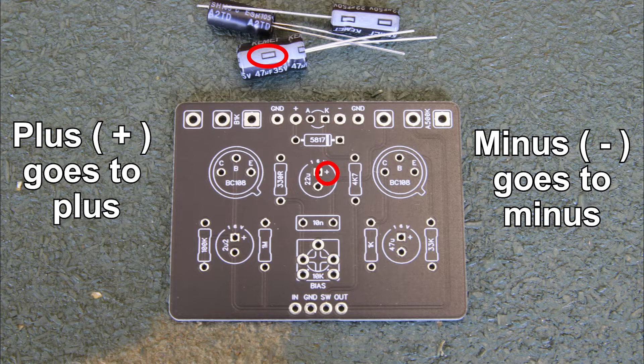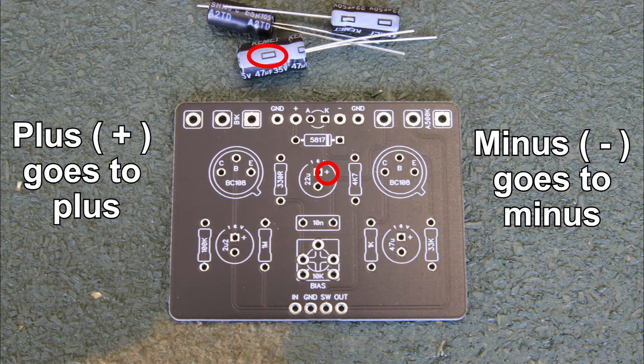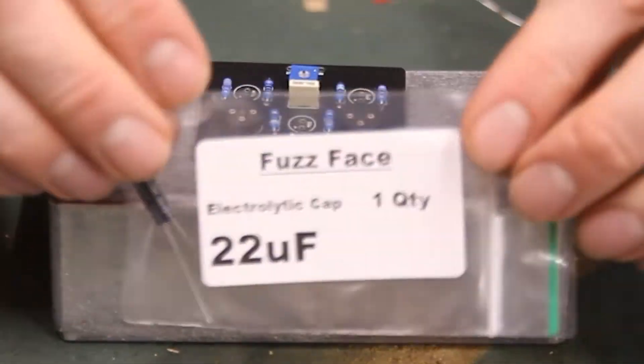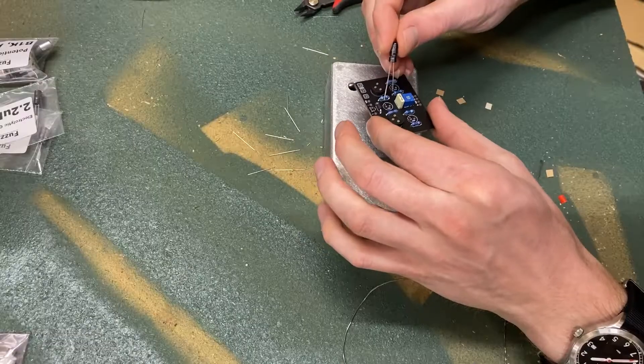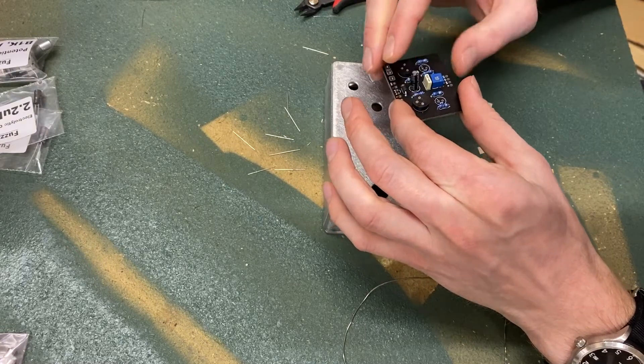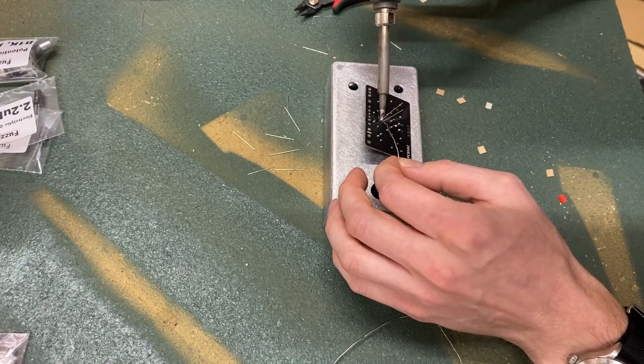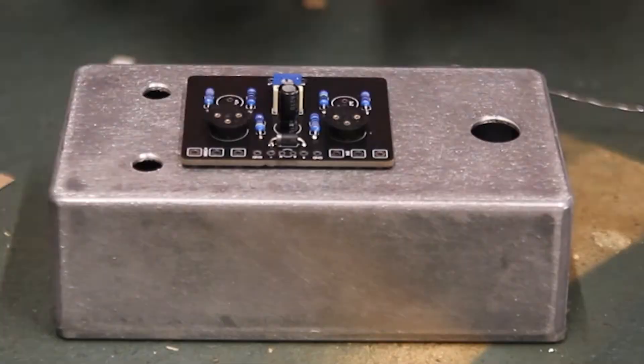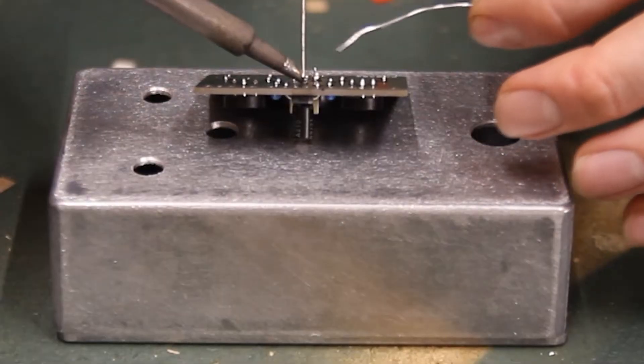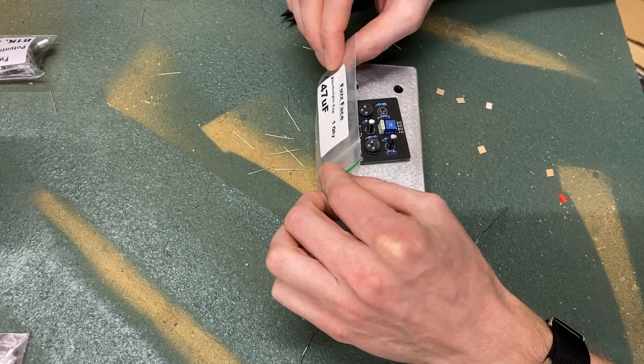There are three different values, so check that you are putting the correct caps in the correct PCB spots. Double check polarity before soldering them in. Take your 22 microfarad or 22UF capacitor and put it in the designated place. Double check value and polarity before soldering it in. Do the same with the 2.2UF and 47UF electrolytic capacitors.